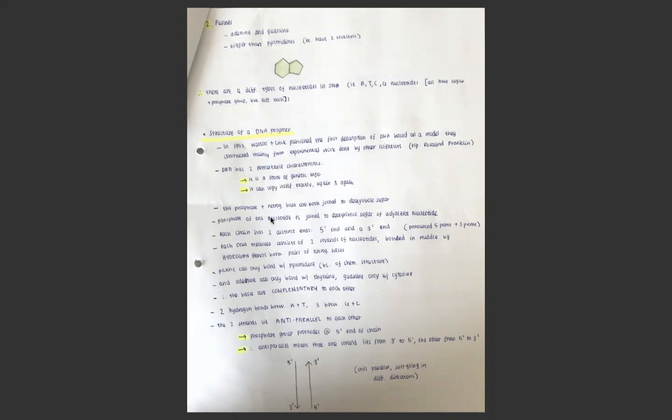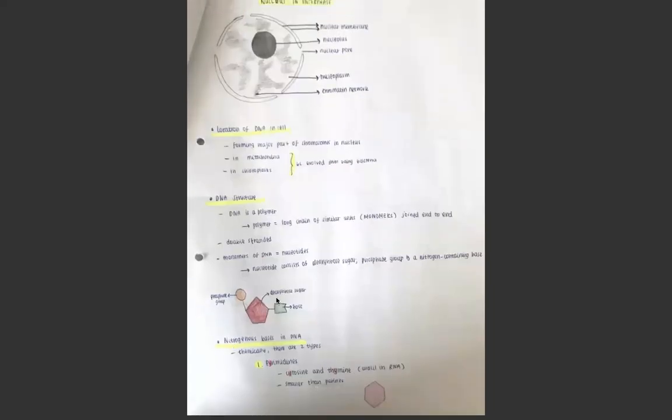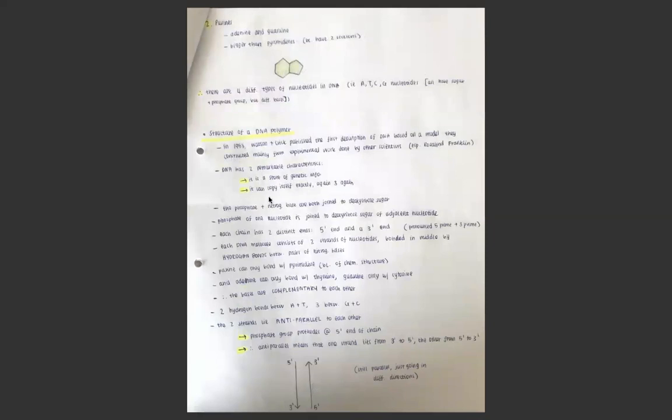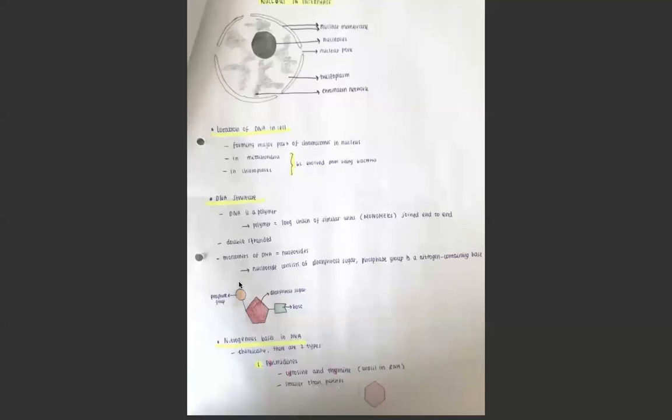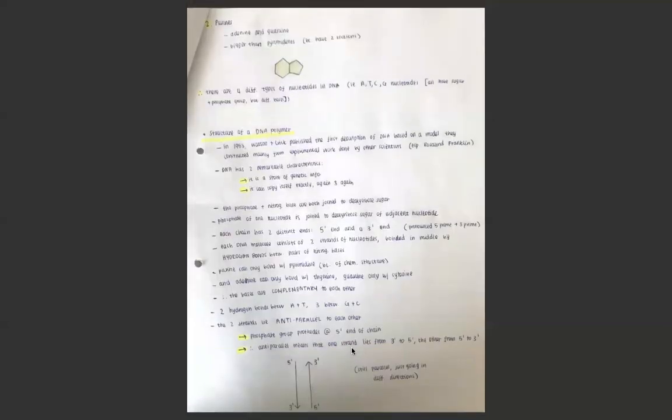The structure of DNA is that the phosphate and the nitrogenous bases are both joined to deoxyribose sugar, as we can see here. The phosphate of one nucleotide is joined to the deoxyribose sugar of the next nucleotide, causing the sugar phosphate backbone. Each chain has two distinct ends: a five prime end and a three prime end. You'd write it like five apostrophe, three apostrophe and say five prime, three prime. It's basically just that one end starts with the phosphate group and ends at the bottom with a sugar molecule. The other strand would start with the deoxyribose sugar running down and ending with the phosphate group.